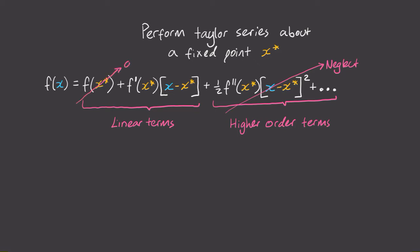Also, notice that the f of x star term is zero because that's the definition of our fixed point. All this means is that we can approximate our function f of x as the first derivative of f evaluated at x star times x minus x star.